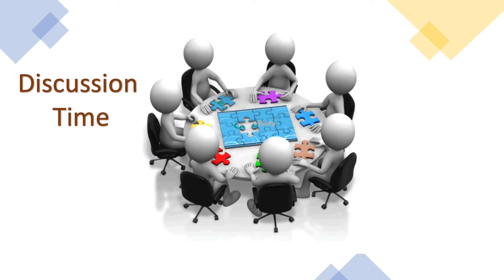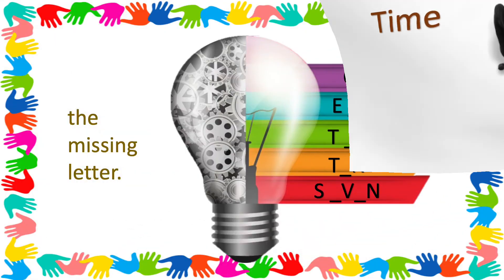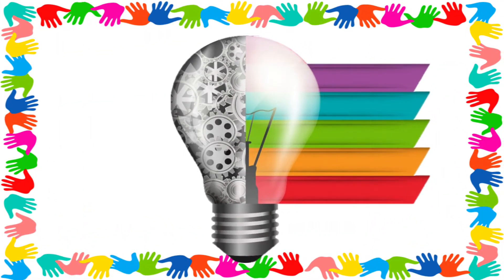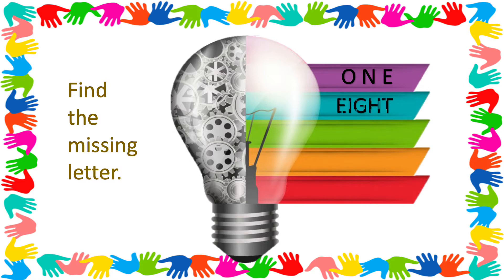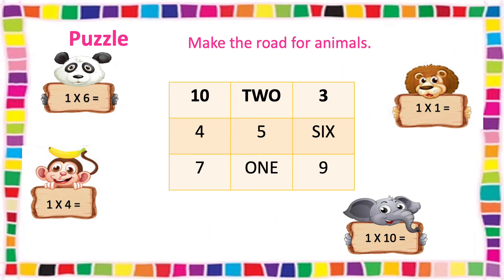It's discussion time! Let's have a discussion! The task that I gave you in the previous video — the question was: Find the missing letter. The answers are: O-N-E = 1, E-I-G-H-T = 8, T-H-R-E-E = 3, T-E-N = 10, S-E-V-E-N = 7. And we also assigned you a puzzle — make the road for animals. Let's discuss the answers.